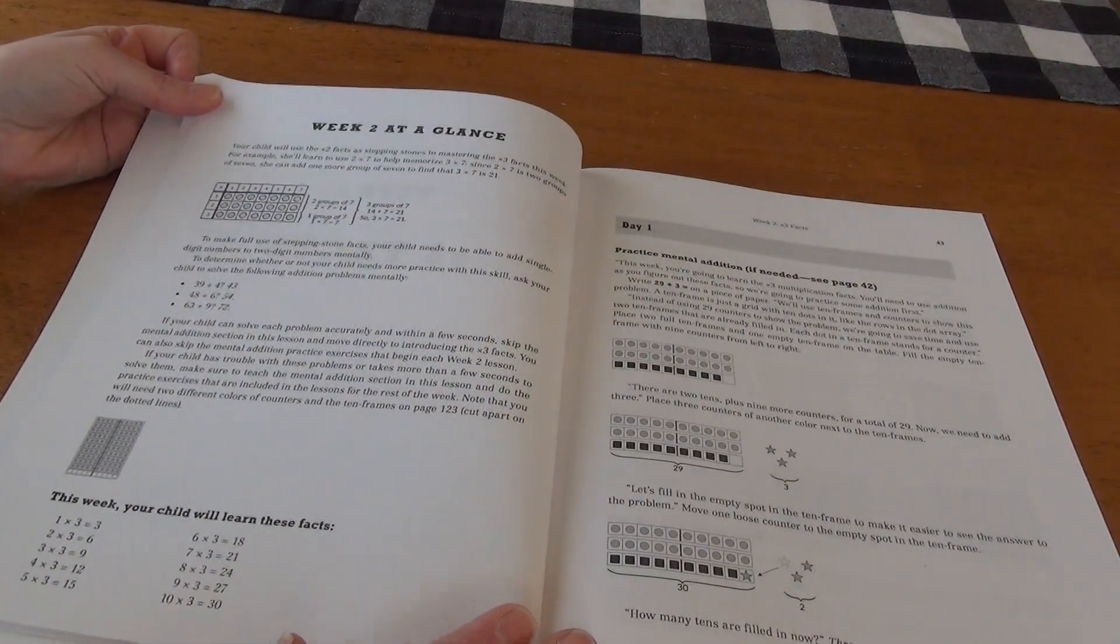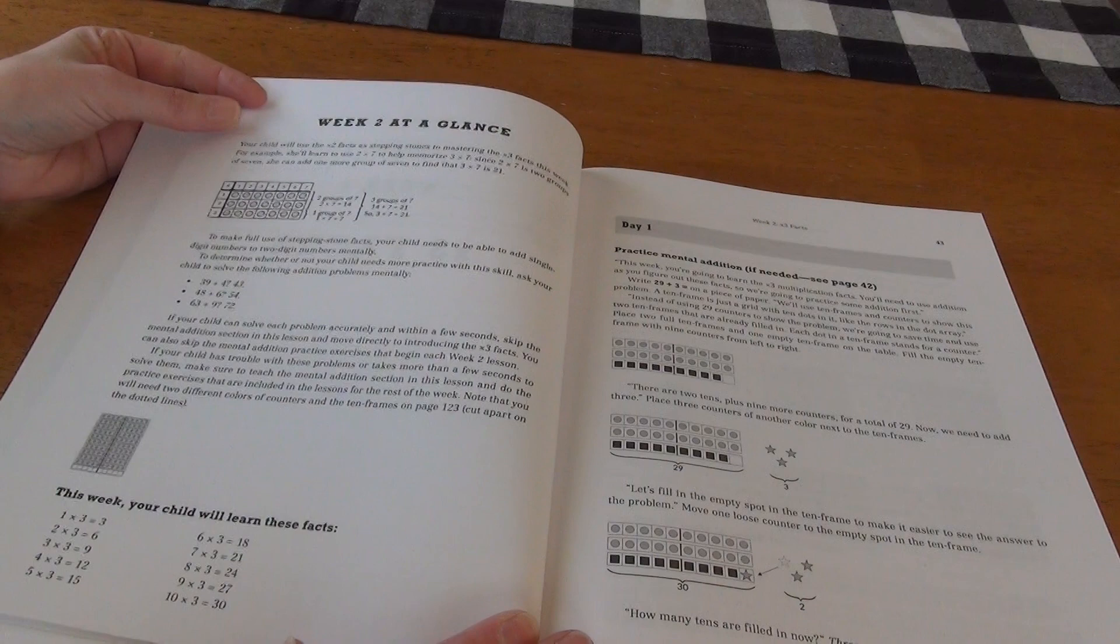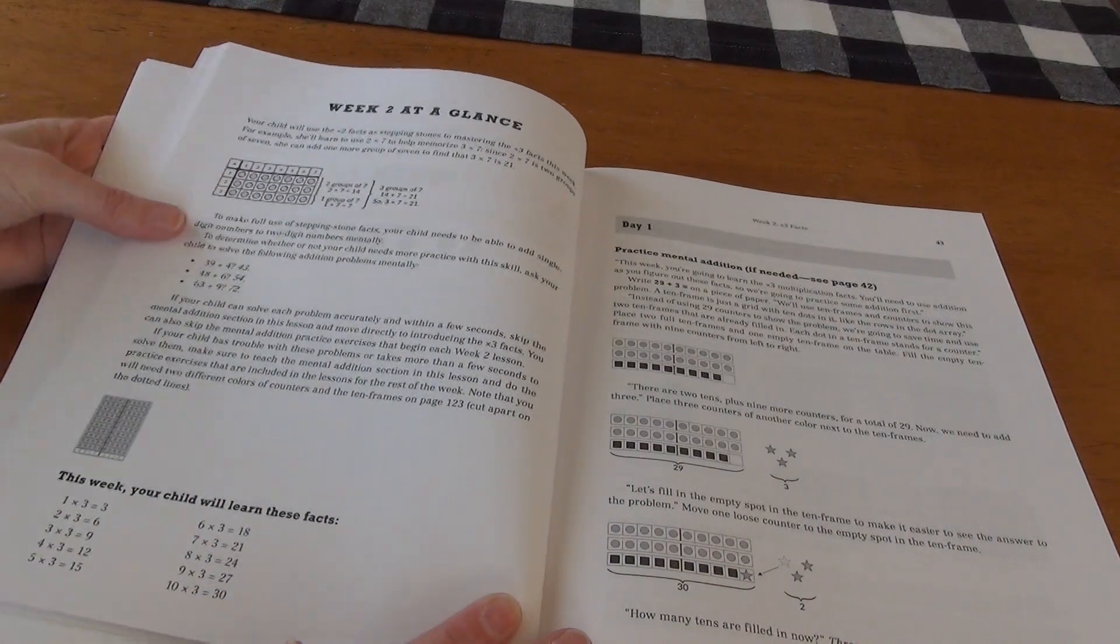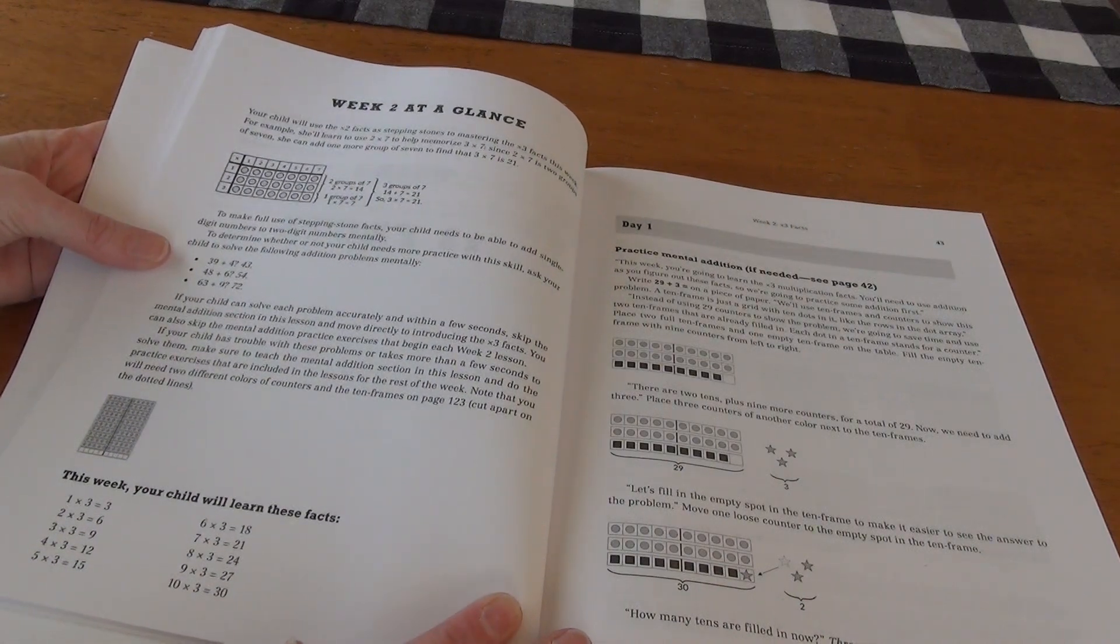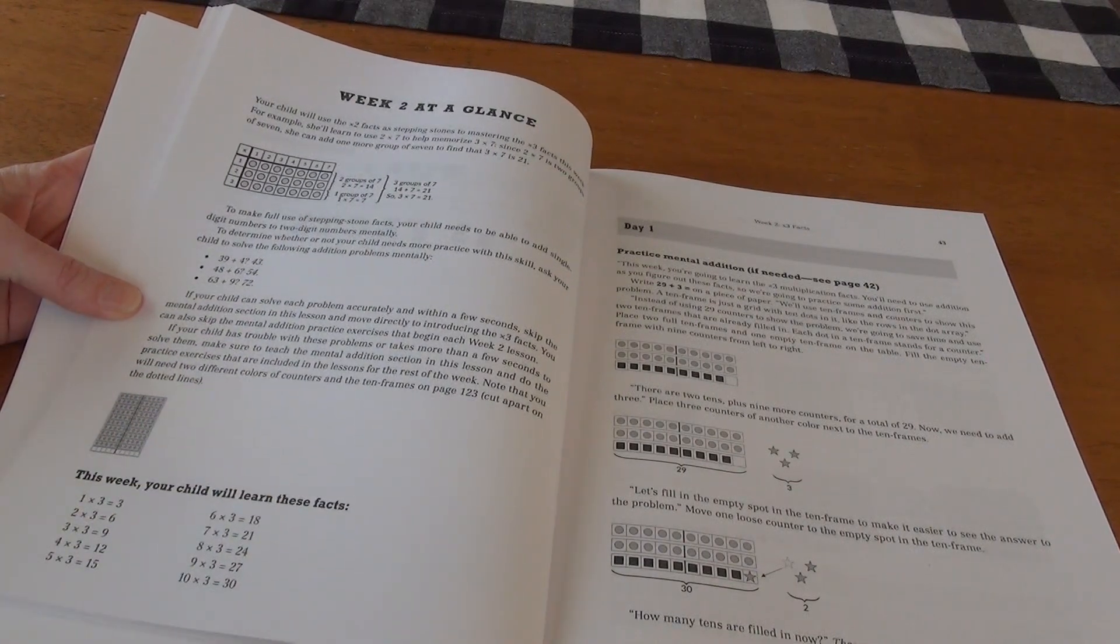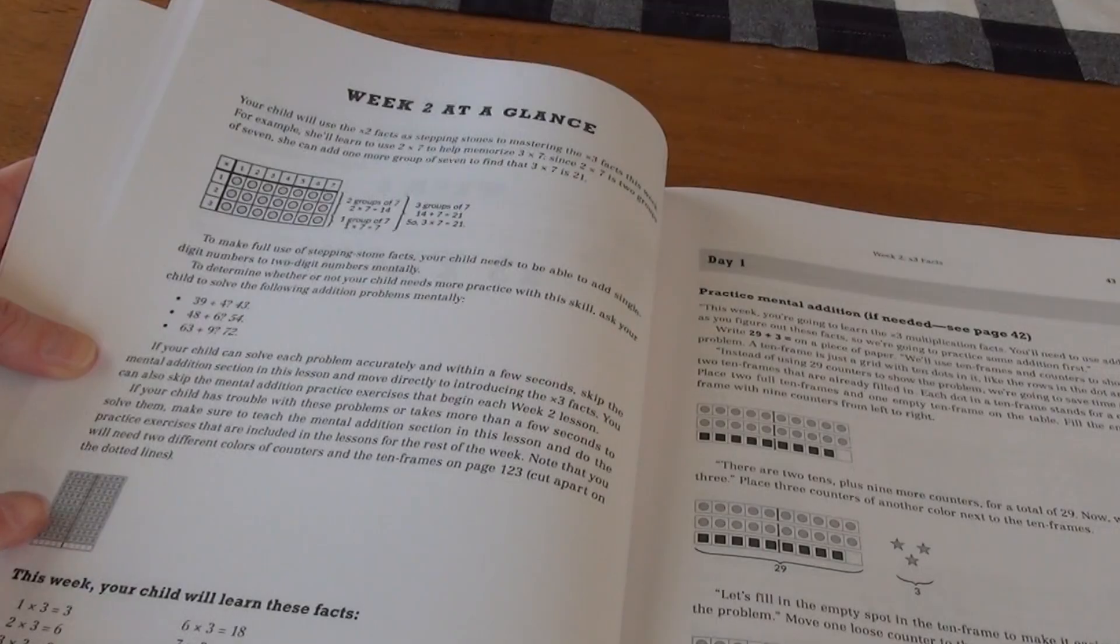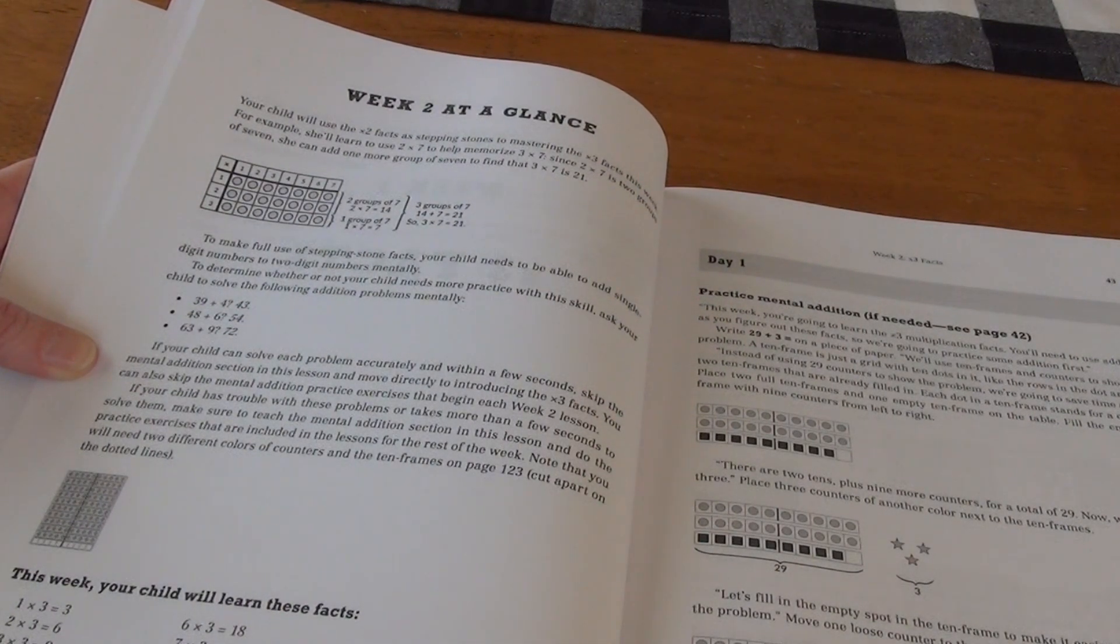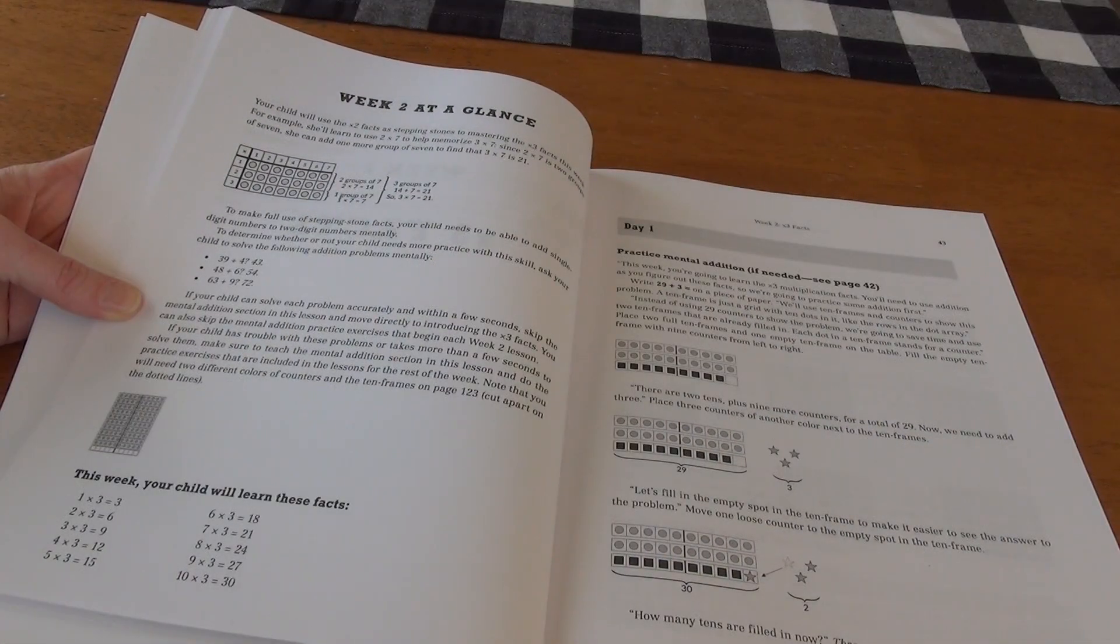The first page that we have here is a week at a glance where it shows you how we're going to be working on this and the stepping stones that we may use. And we'll also learn these facts that are listed here. It says that if your child has trouble with these problems or takes more than a few seconds to solve them, make sure to teach the mental addition section in this lesson and do the practice exercises that are included in the lessons for the rest of the week.